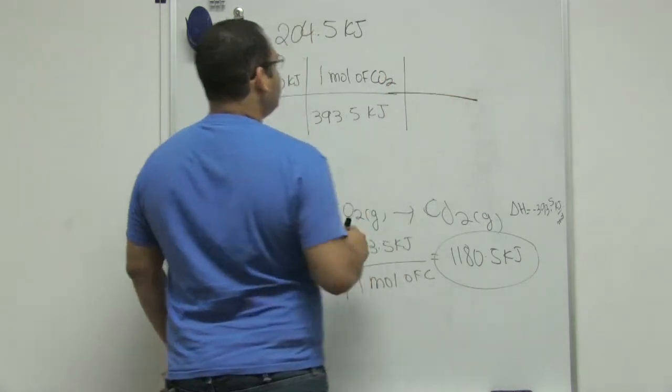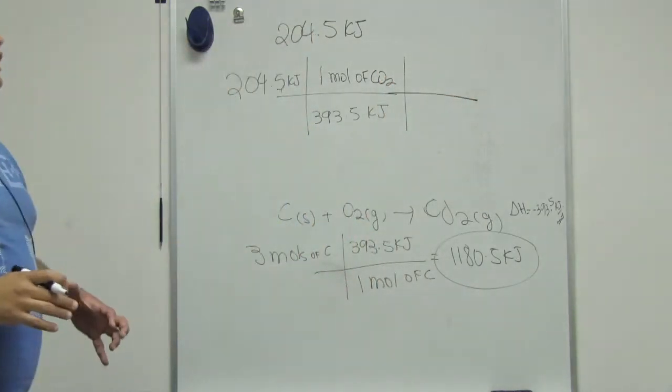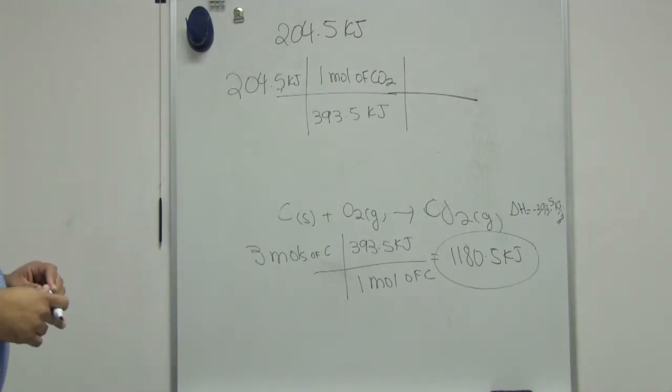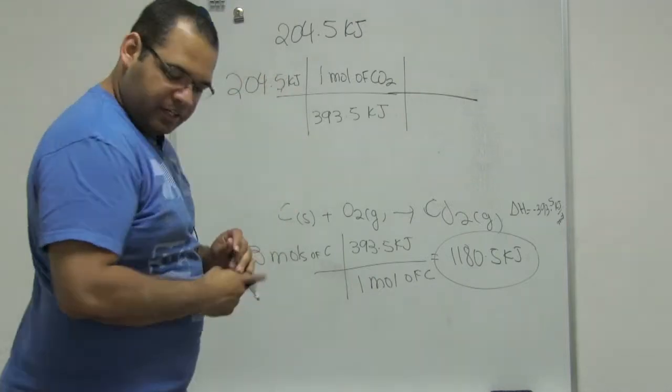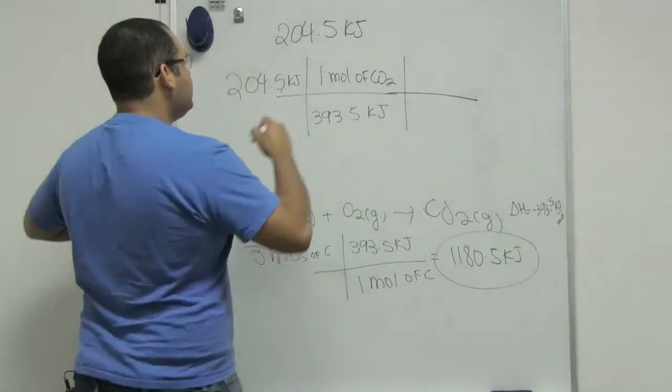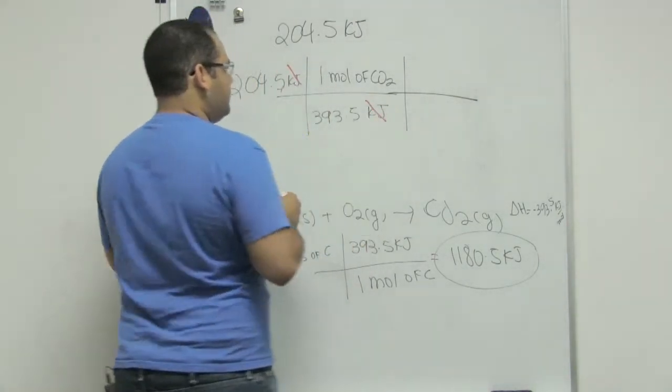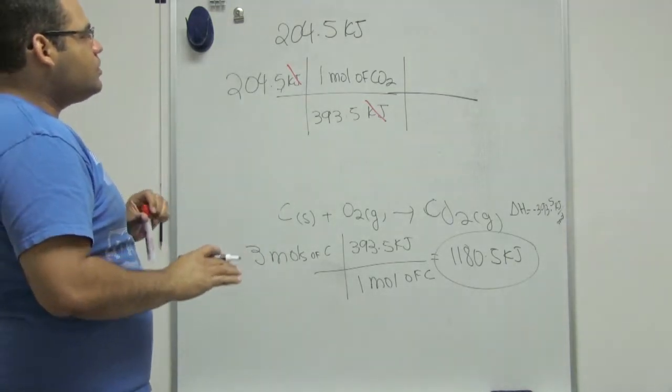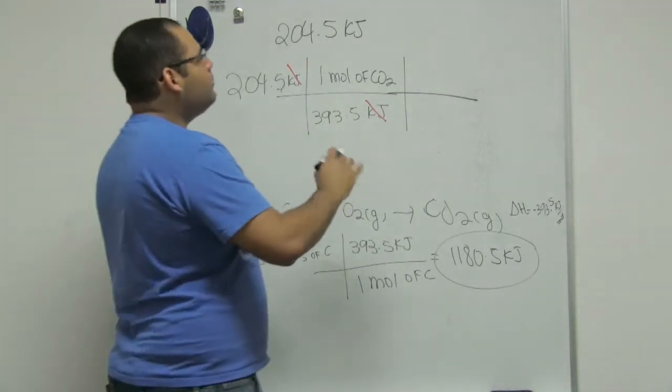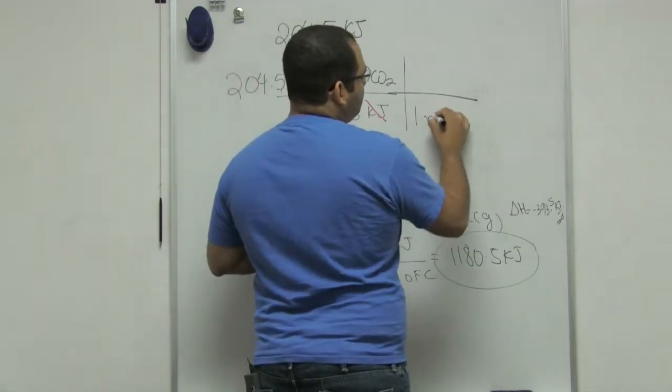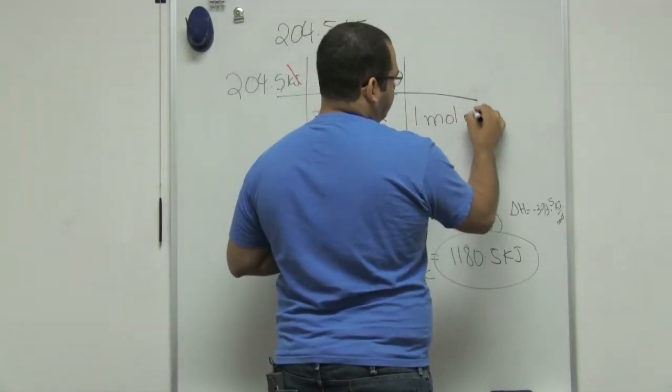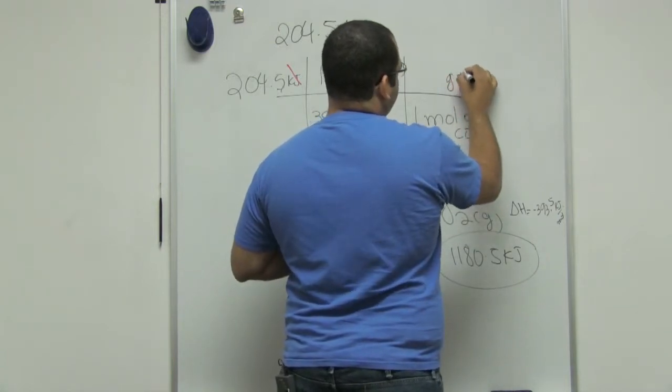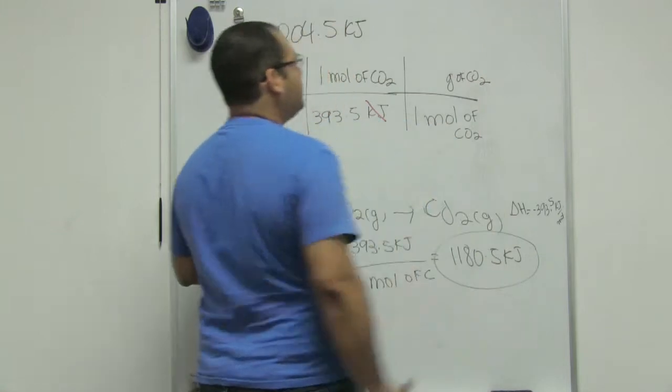Now the question asks me how many grams would be produced of CO2. If I stop my calculation here, I know that this gives me the moles of CO2. If I want to convert moles to grams, I need one more step where moles goes in the bottom and grams of CO2 goes in the top.